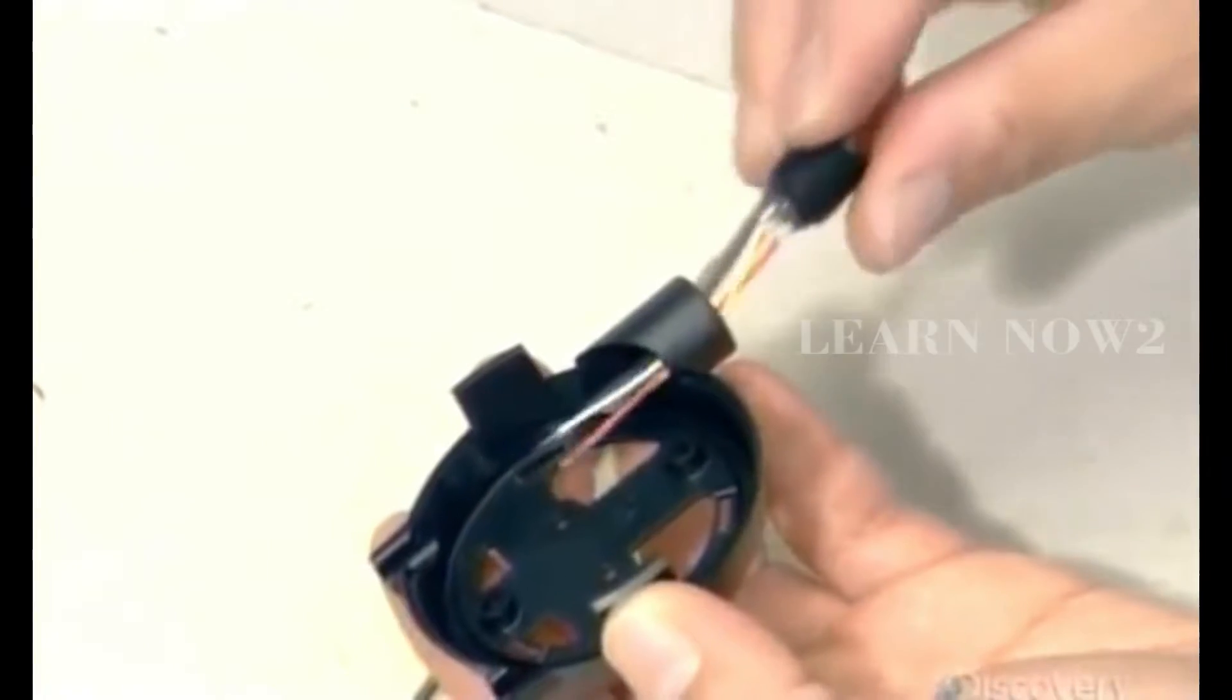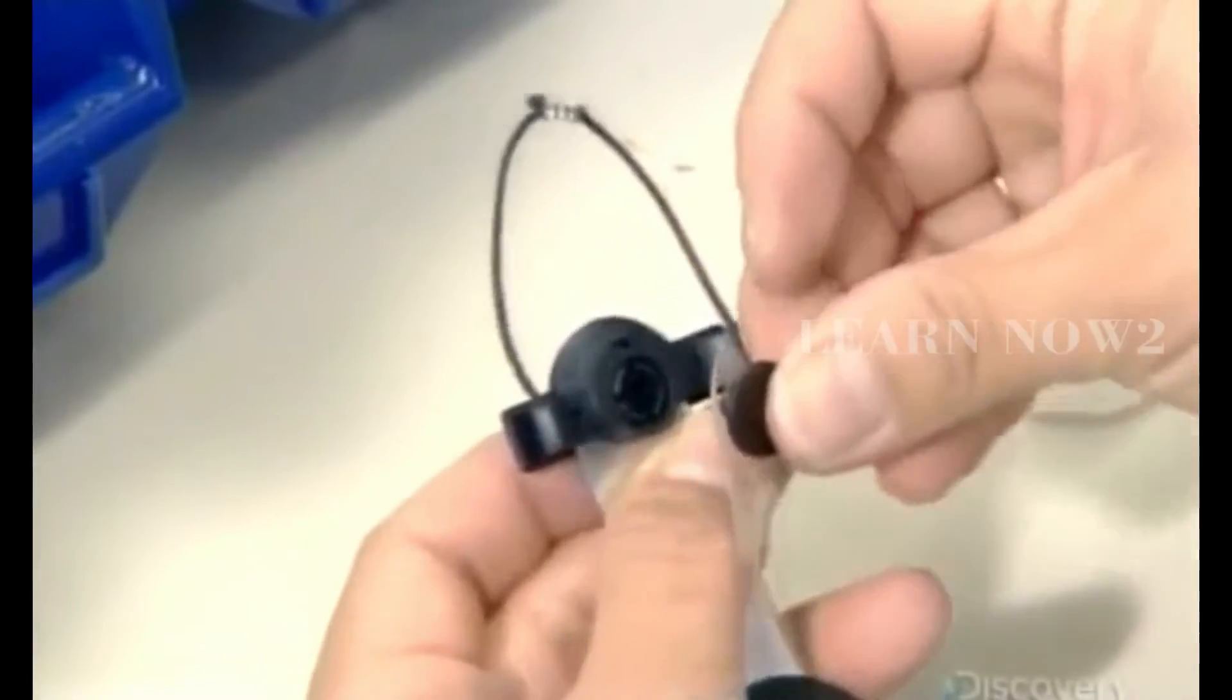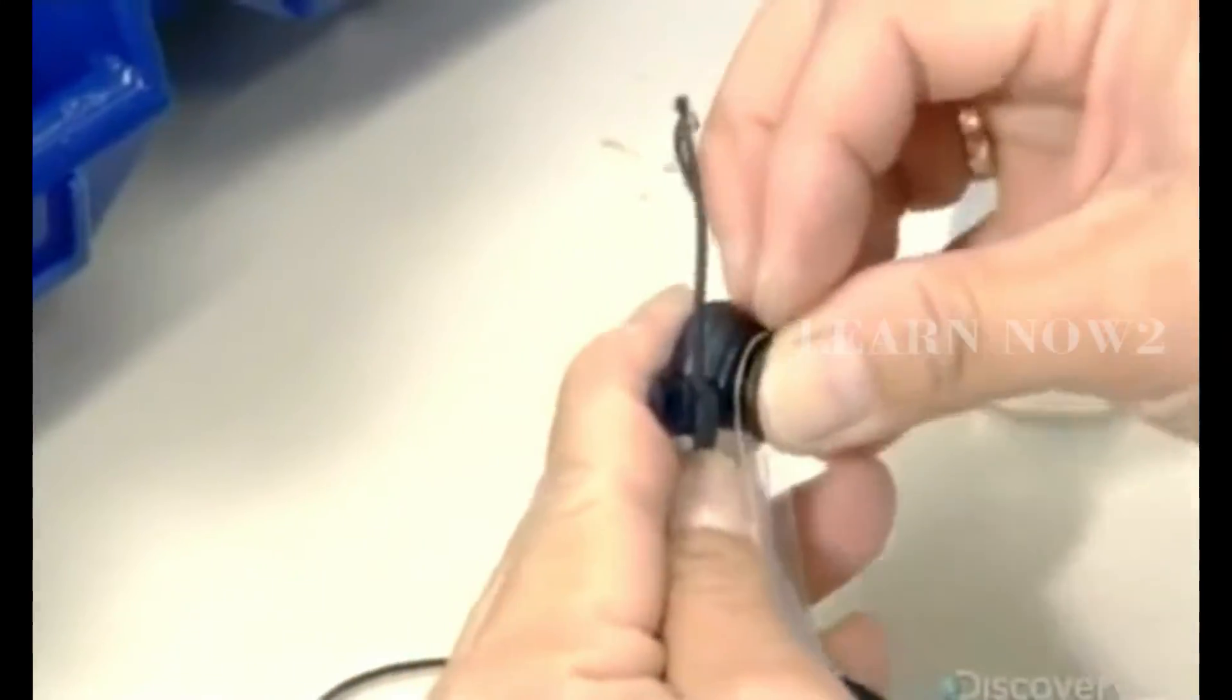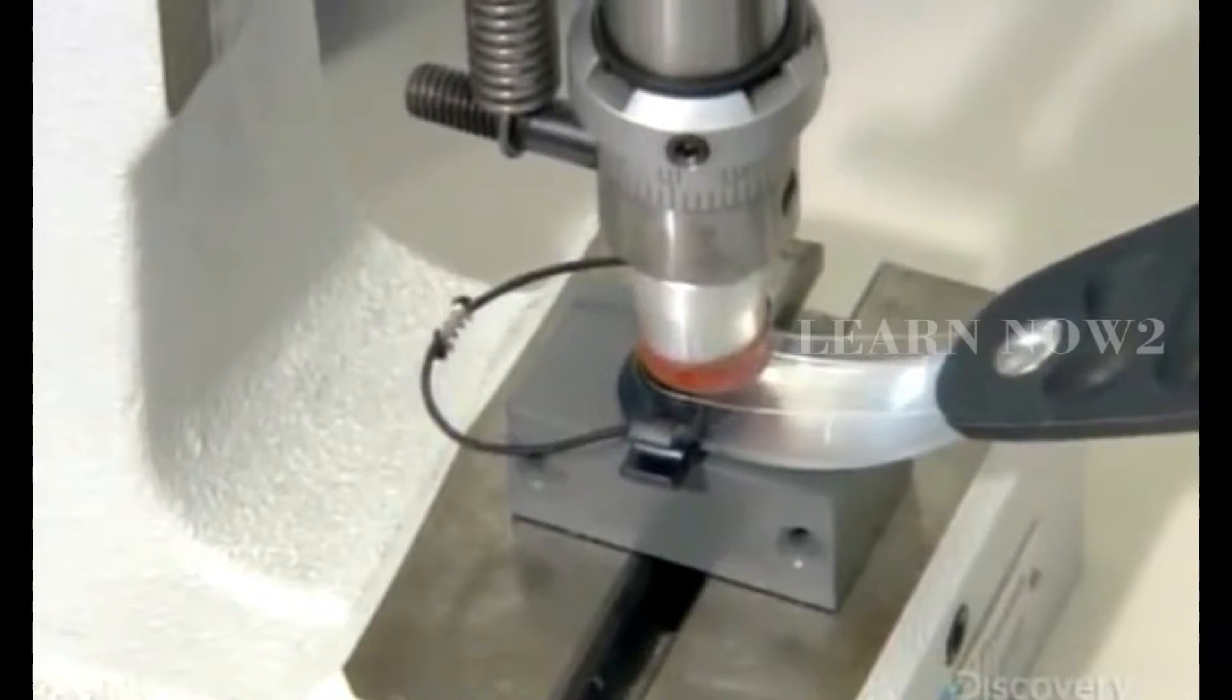The next technician installs a connector for the headphone's audio cable in a plastic strain relief. An adjustable band will allow the headphones to fit on heads of all shapes and sizes. The operator presses the parts together with a hydraulic tool.